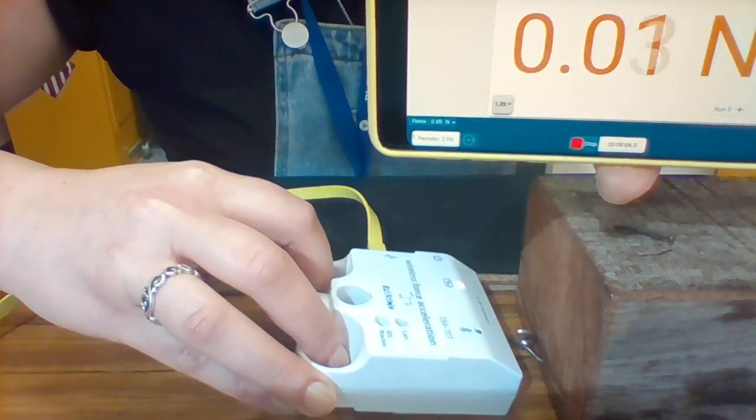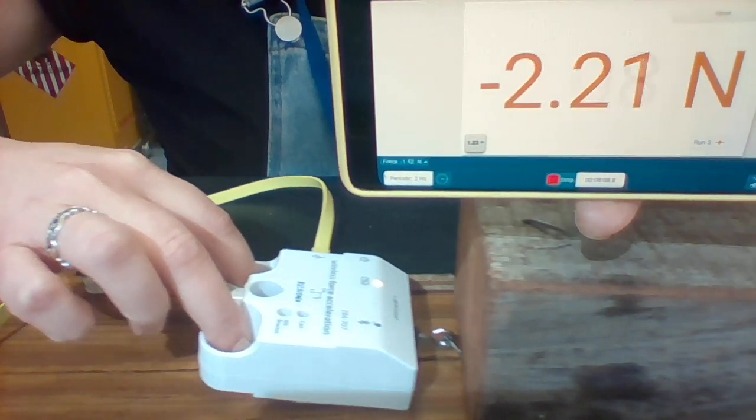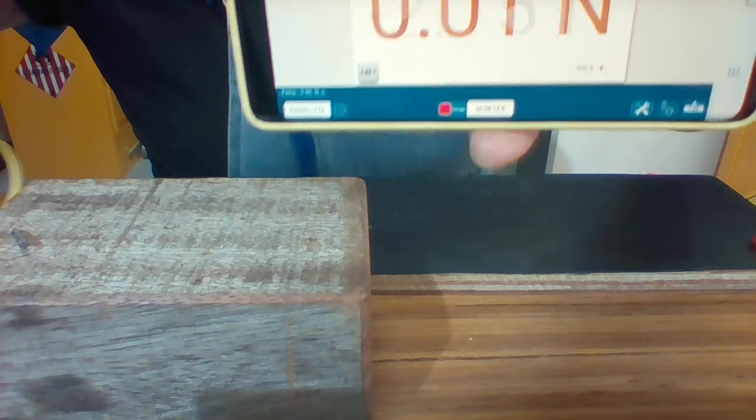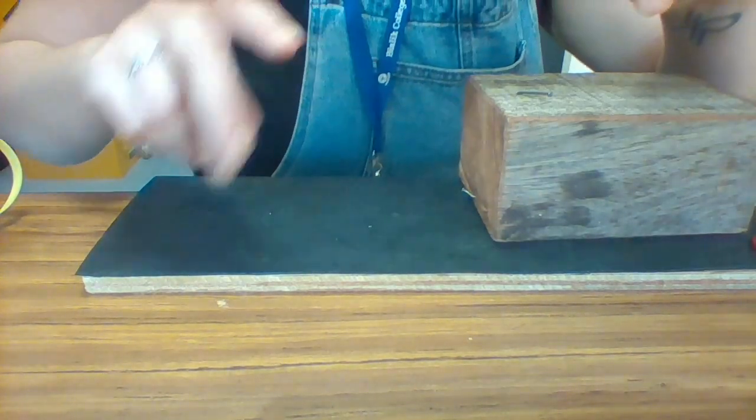Alright, so here we go, hooking it on and pulling. Alright, great. Take down an approximate. That's for laminate. Next surface.